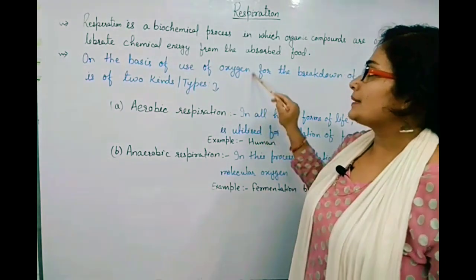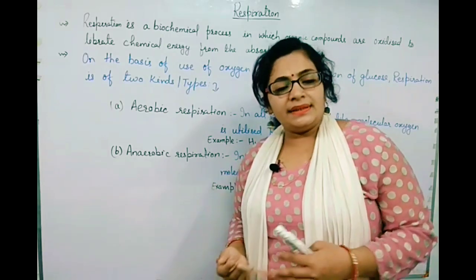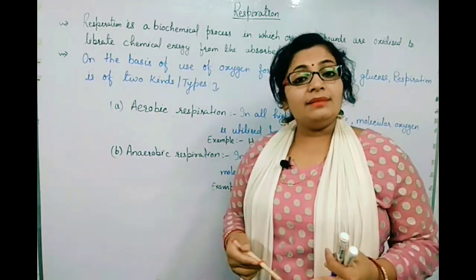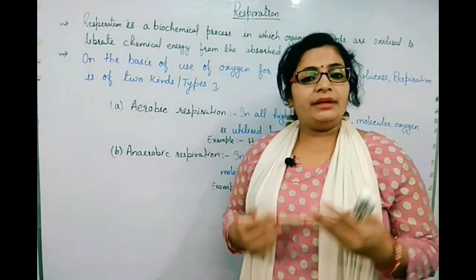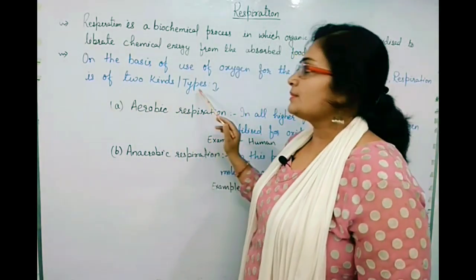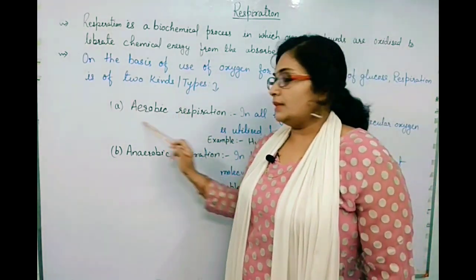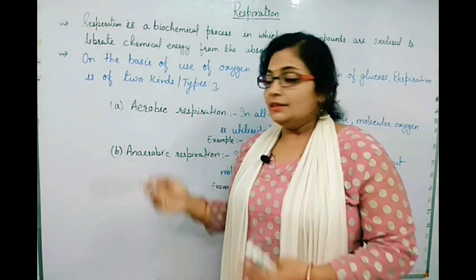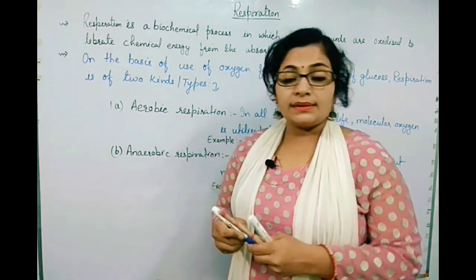On the basis of use of oxygen, some organisms break down glucose in the presence of oxygen and some do it without oxygen. On this ground, respiration is of two types. One is aerobic respiration — organisms that perform aerobic respiration are called aerobes. Aerobic respiration means respiration in the presence of oxygen.